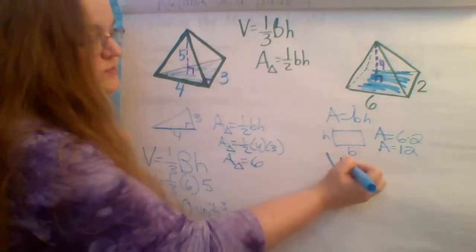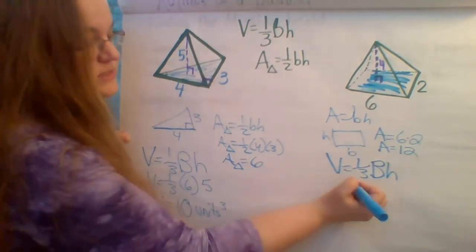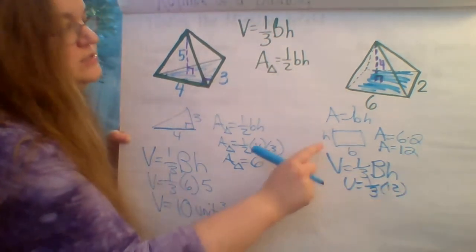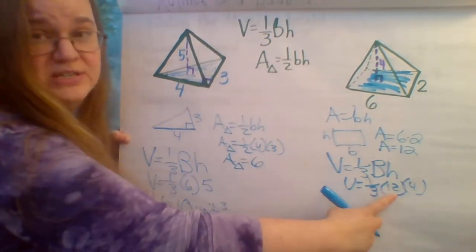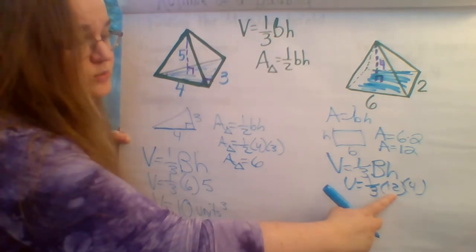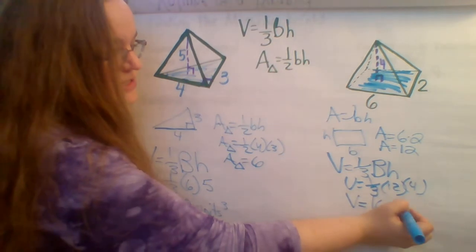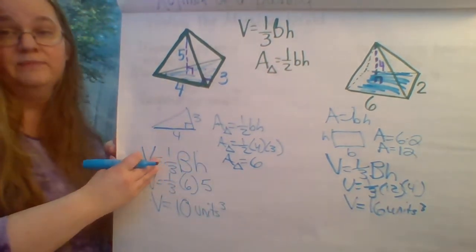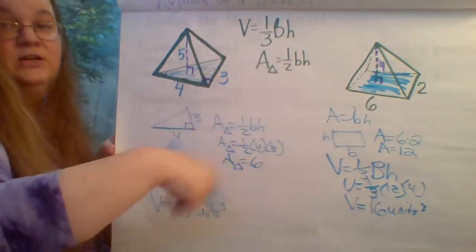Using the formula: volume equals one-third times the area of the base times the height. So volume equals one-third times 12, times the height of 4. One-third of 12 is the same as 12 divided by 3, which is 4, and 4 times 4 is 16. So the volume is 16 units cubed. Taking the steps: find the area of the base, what it's sitting on, then multiply by the height and take one-third.